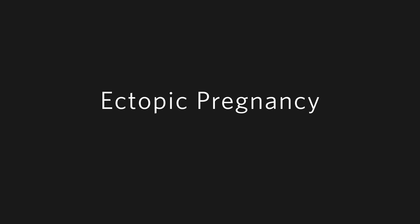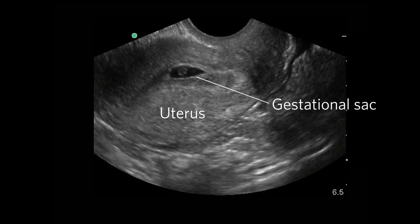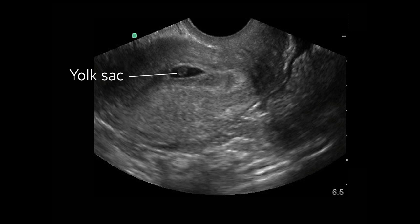Point-of-care ultrasound is very helpful in the evaluation of a potential ectopic pregnancy. Here's the image you're trying to achieve with this scan. In this image, you can see a gestational sac located within the uterus and a yolk sac there within it.